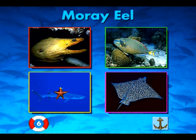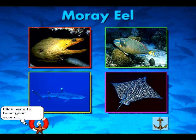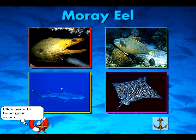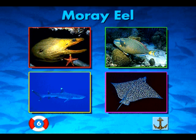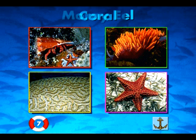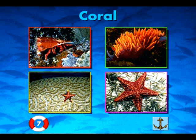I'm a moray eel. Can you find me? This is your score so far. Six. You're right! I'm a moray eel. I'm a coral. Can you find me? You're right! I'm a coral.